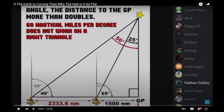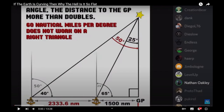You cannot solve, using triangulation, your distance to the GP. On a spherical earth, however, you can, because that calculation doesn't require any trigonometry and triangulation at all. It just uses the 60 nautical miles per degree formula — a formula that cannot work on a flat earth.